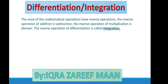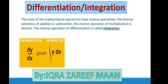Most mathematical operations have inverse operations: the inverse of addition is subtraction, the inverse of multiplication is division, and the inverse of differentiation is called integration. The notation for the relationship between differentiation and integration: differentiation is the rate of change of the dependent variable y with respect to the independent variable x, and the integral of y is taken with respect to dx.